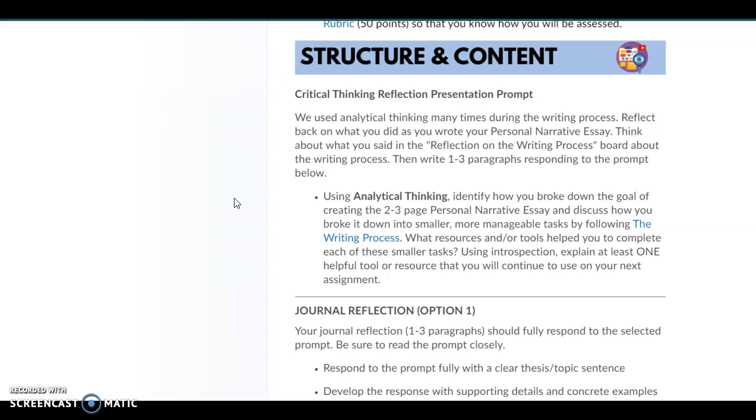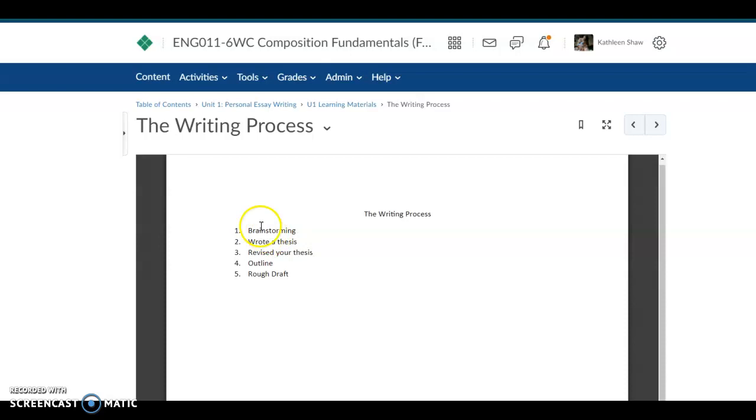Using analytical thinking, identify how you broke down the goal of creating the two to three page personal narrative essay and discuss how you broke it down into smaller, more manageable tasks by following the writing process. If you click this, this will bring up the document that I created for you guys that you can see right here. There's the writing process. Brainstorm. This is what we did. We brainstormed. We wrote a thesis. We revised our thesis. We outlined and we did a rough draft. So these are the stages of the writing process that we've already done.